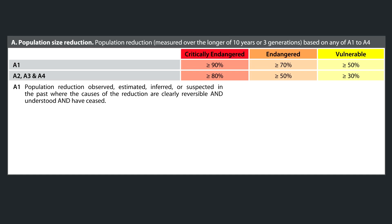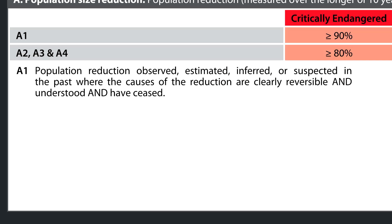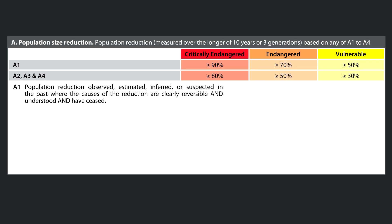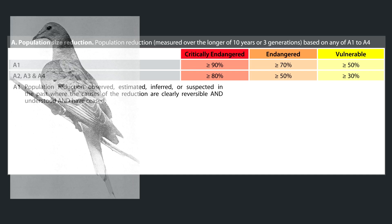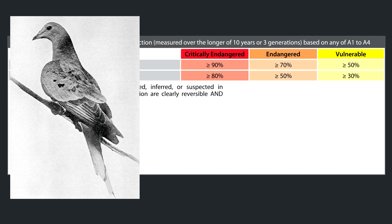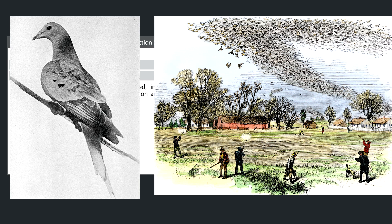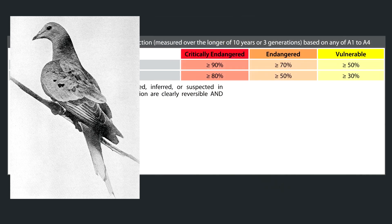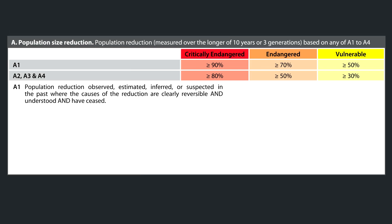For A1, this is a population reduction observed, estimated, inferred, or suspected in the past, where the causes of the reduction are clearly reversible and understood and have ceased. A really good example of where A1 could have applied is the passenger pigeon — at the time probably the most abundant bird in the entire world, but then it was extensively hunted, with habitat loss also a factor. If people had gotten together and said 'we need to stop hunting the passenger pigeon, its numbers are really declining,' that means the population did experience a steep decline, but the reasons are understood, reversible, and have stopped. In that case, the population could have been listed under Criteria A1.